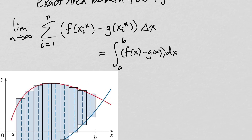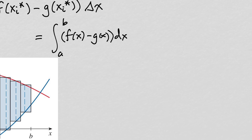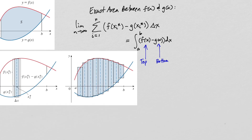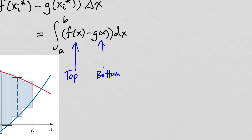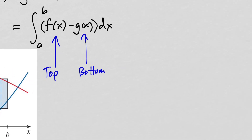One thing that's very important to keep in mind: the formula is only true if f of x is the top function and g of x is the bottom function. When you get the height of the rectangle, you have to take the greater y value minus the lesser y value. If you subtract in the wrong order, your area will end up being negative. The area between two curves is always a positive number.